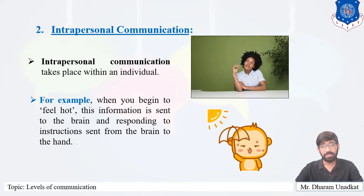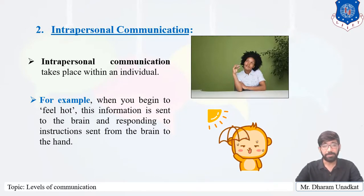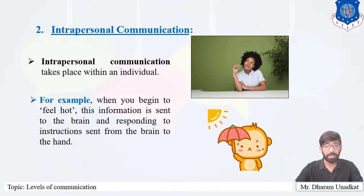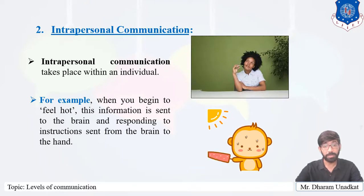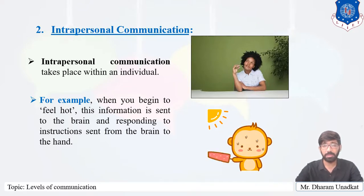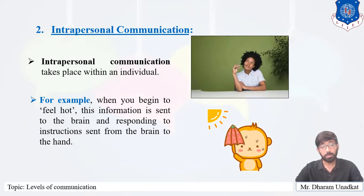Intrapersonal communication pertains to thinking, which is the basis of information processing. Without such internal dialogue one cannot proceed to further levels of communication. While communicating with another party, our internal dialogue continues concurrently — planning, waiting, considering, and processing information. Self-motivation and self-determination also take place at the intrapersonal level. For example, resolving to achieve a 9 SPI this semester, or dreaming — dreaming is also a best example of intrapersonal communication.